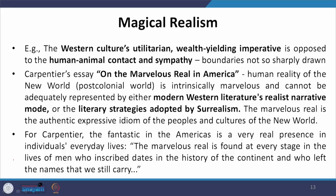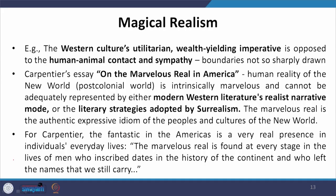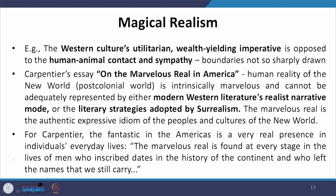It is not necessarily a homocentric society, and the value systems are quite apart from one another. Carpentier's essay on the marvelous real in America talks about the human reality of the new world — referring to the post-colonial world — which is intrinsically marvelous and cannot adequately be represented by either modern Western literature's realist narrative mode or the literary strategies adopted by surrealism. The marvelous real is the authentic expressive idiom of the peoples and cultures of the new world. For Carpentier, the fantastic in America is a very real presence and it informs an individual's everyday lives. In Carpentier's words: 'The marvelous real is found at every stage in the lives of men who inscribed dates in the history of the continent and who left the names that we still carry.'